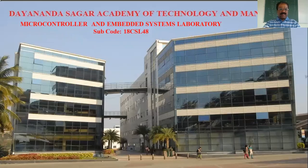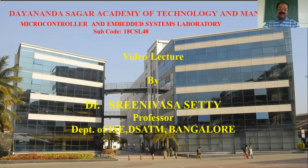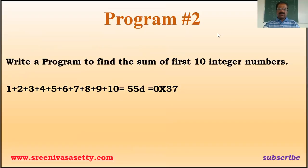Welcome to this video lecture on microcontrollers and embedded systems. In the last class I explained about the first program — how to perform multiplication of two 16-bit numbers. Today I'm going to explain program number two from the part-year programs: write a program to find the sum of the first 10 integer numbers — that is, 1 plus 2 plus 3 up to 10. If you add everything together we get 55 in decimal.